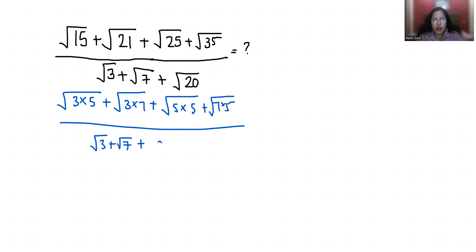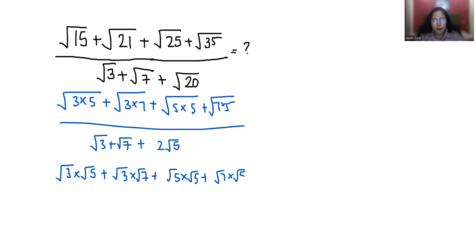Now this I can write as √3·√5 + √3·√7 + √5·√5 + √7·√5, all divided by √3 + √7 + 2√5.